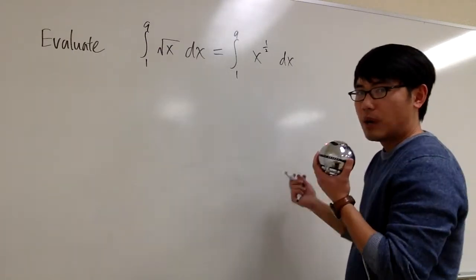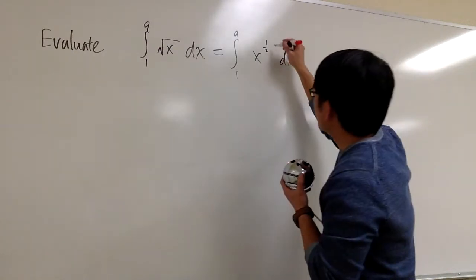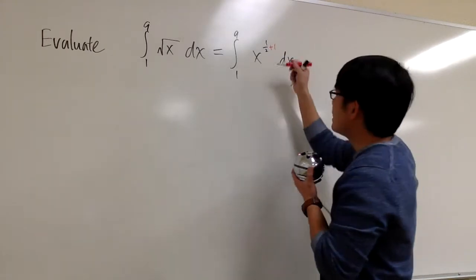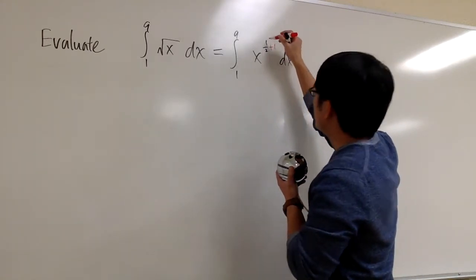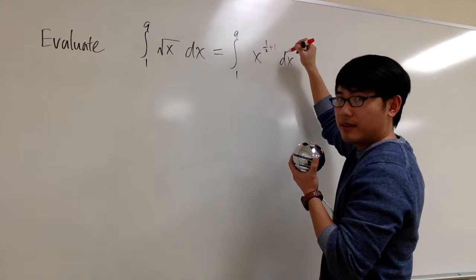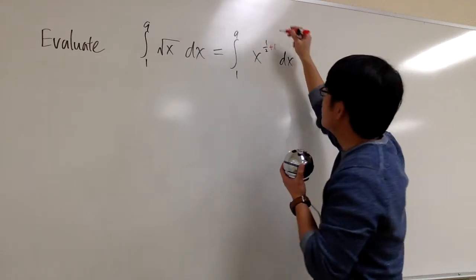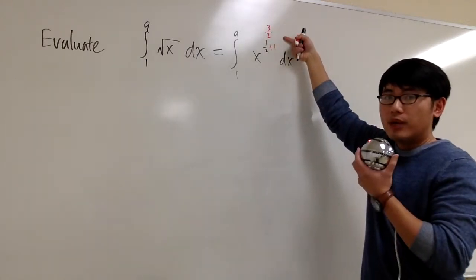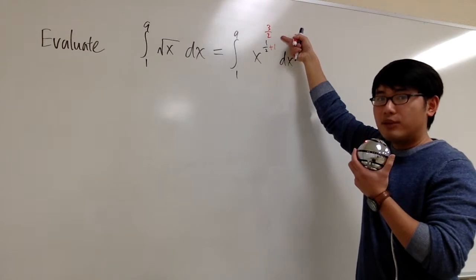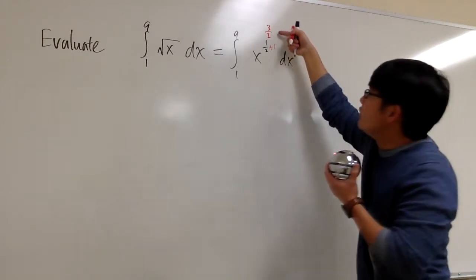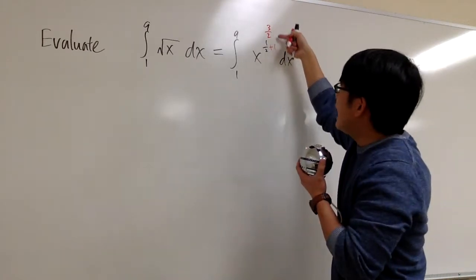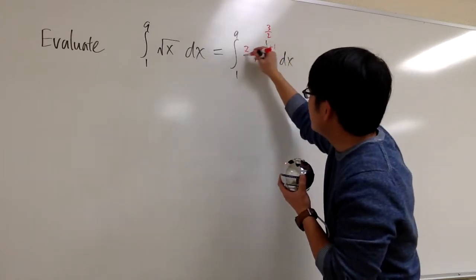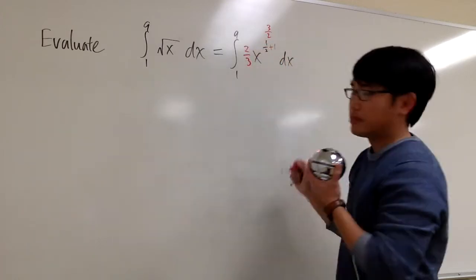Now, for the reverse power rule, we are going to add 1 to the exponent first. 1/2 plus 1, which is 1/2 plus 2/2, which gives us 3/2. That's the new exponent. And we are going to divide by the new exponent — divide by 3/2 — which is the same as multiplying by 2/3. So I'm going to put multiply by 2/3 right here.